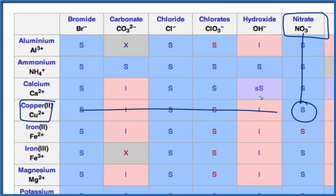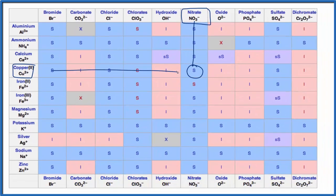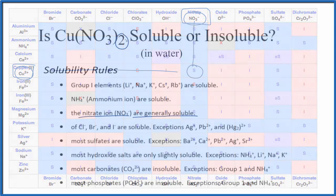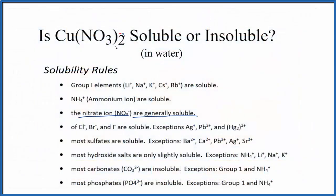So if you had some solid copper-2 nitrate and you put it in water, it would dissolve and split apart into its ions. You'd have the copper-2 ion, Cu²⁺, and then you'd have the nitrate ion — but you'd have two nitrate ions, because of the subscript, which means we have two nitrate ions.